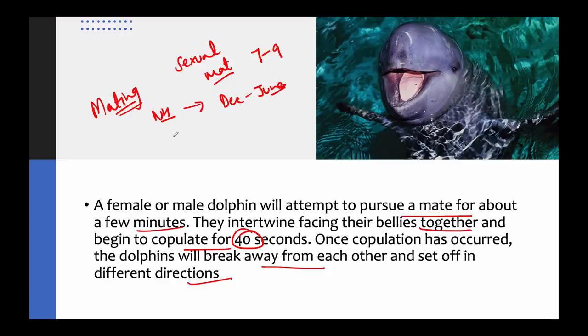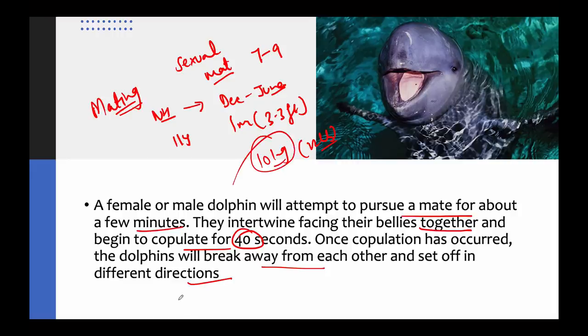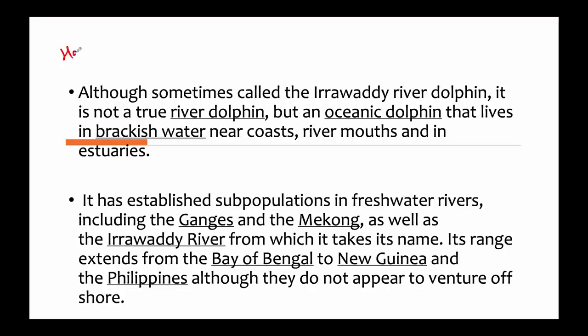The gestation period is 14 months. Like a cow, they give birth to a single calf every two to three years. The baby dolphin at birth is one meter (3.3 feet) in length, and the birth weight is about 10 kg (22 lb). Weaning occurs after two years, and the lifespan of this dolphin is about 30 years.